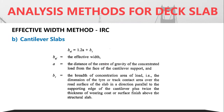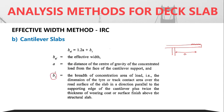For cantilever slabs, B_effective = 1.2A + B1, where A is the distance of the center of gravity of the concentrated load from the face of the cantilever support. B1 is the breadth of the concentration area of load. Since there is a small road surface of thickness H followed by the deck depth D, the breadth of the concentration area B1 = W + 2H, accounting for the 45-degree dispersion.